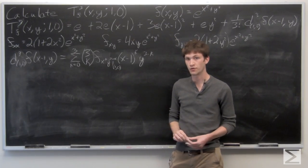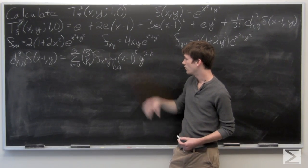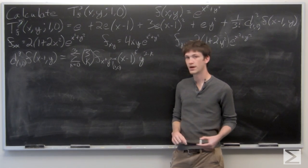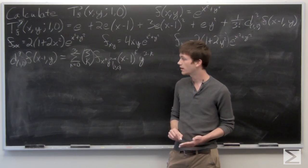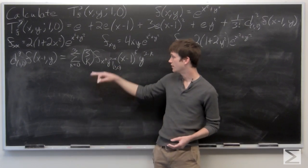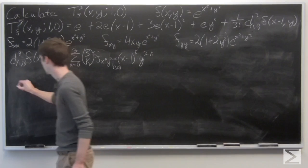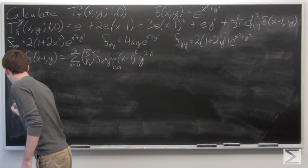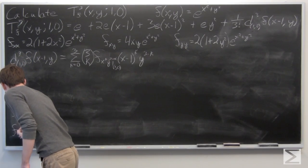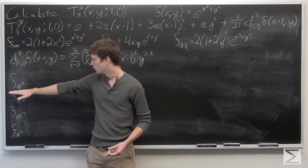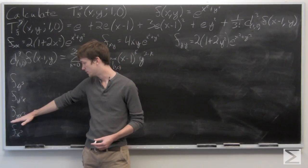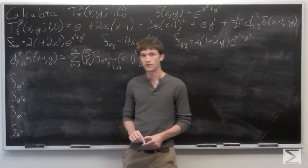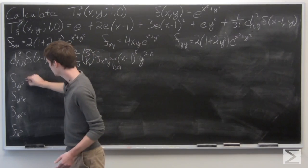We're going to need to know the third mixed partial derivatives, so we can go ahead and write them all out: f_yyy, f_yyx, f_yxx, and f_xxx, where y cubed means take the partial derivative of f with respect to y three times.